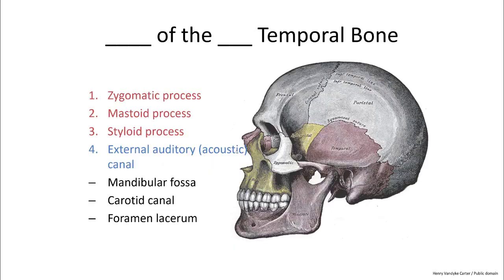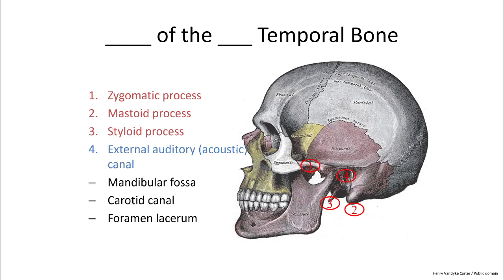The temporal bone has a number of features. The proper way to say a feature such as the zygomatic process is to say the feature first, then the bone. Because we have two temporal bones, you indicate whether it is the left or right temporal bone. Number one is the zygomatic process of the left temporal bone. Then we have the mastoid process of the left temporal bone — you can feel this prominent bulge just behind your ear. Then the styloid process of the left temporal bone, and finally the external auditory or acoustic canal of the left temporal bone.